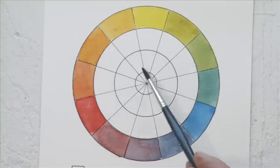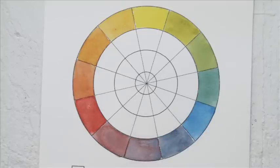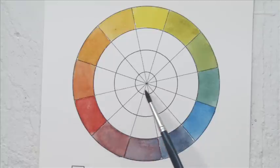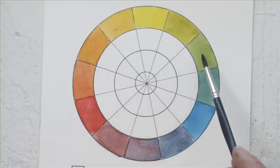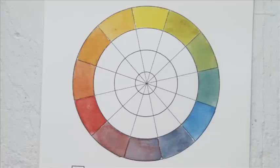All we have to do now is fill in the tertiary colours in the centre. Our browns and greys can be made by mixing together colours that are opposite each other on the colour wheel. These colours are called complementaries.